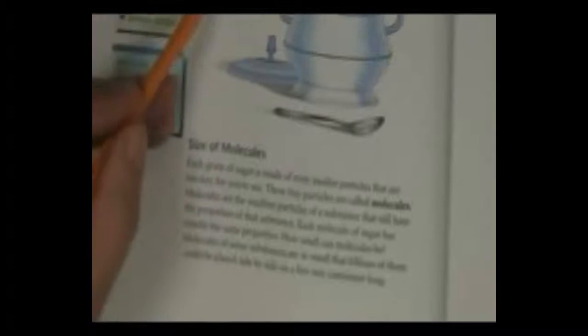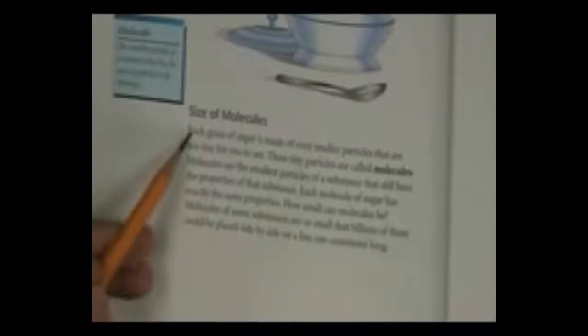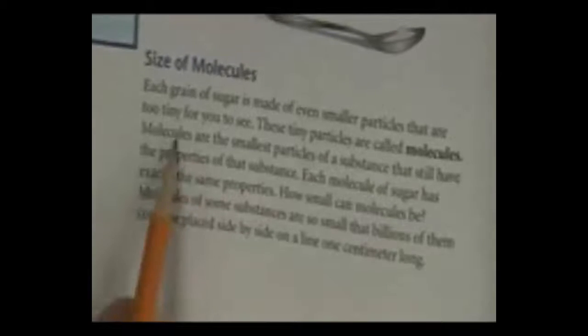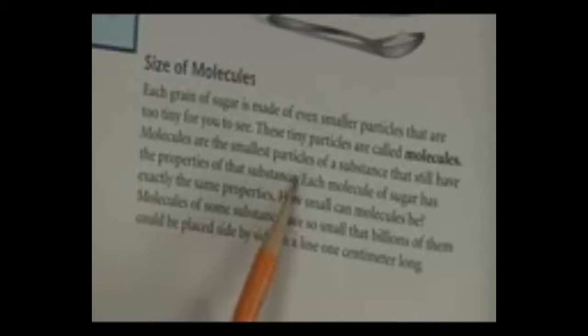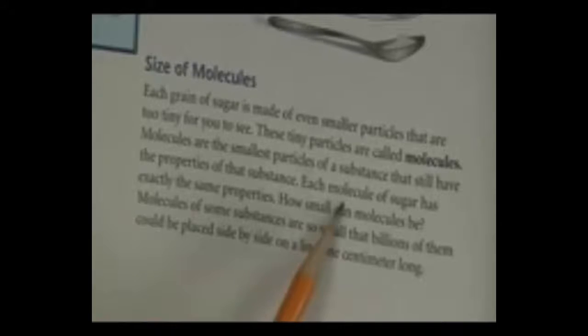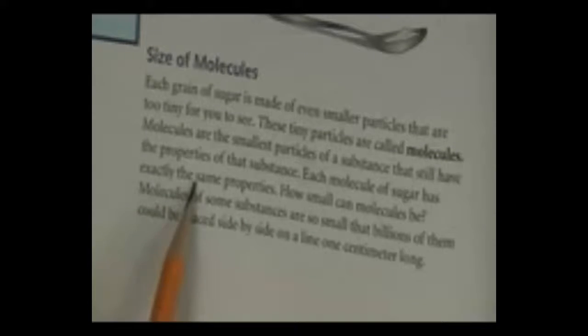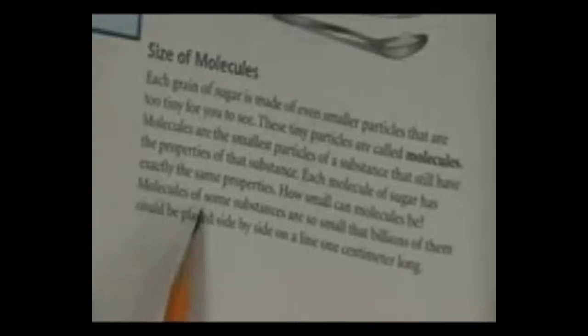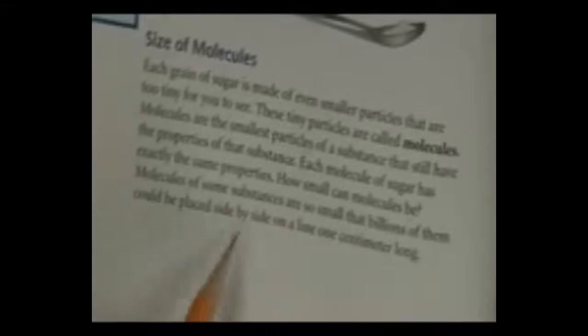Size of molecules. Each grain of sugar is made of even smaller particles that are too tiny for you to see. You cannot see them. These tiny particles are called molecules. Molecules are the smallest particle of a substance that still have the properties of that substance. Each molecule of sugar has exactly the same properties. How small can molecules be? Molecules of some substances are so small that billions of them could be placed side by side on a line one centimeter long.